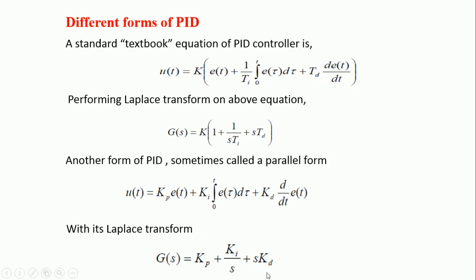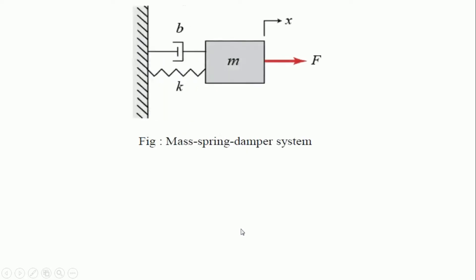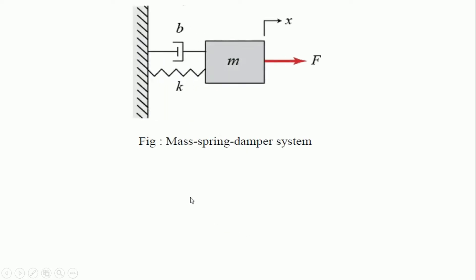Now, let us suppose one example which consists of simple mass spring and damper on which force F is acting. The governing equation of this spring mass damper, if you solve, you get the governing equation like this: mx double dot plus bx dot plus kx is equal to f.